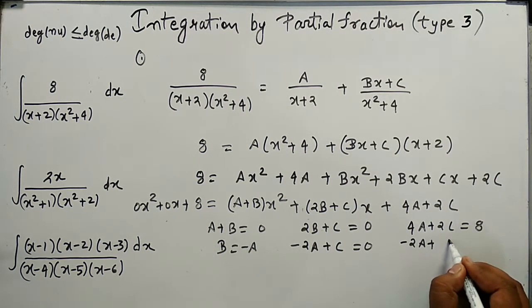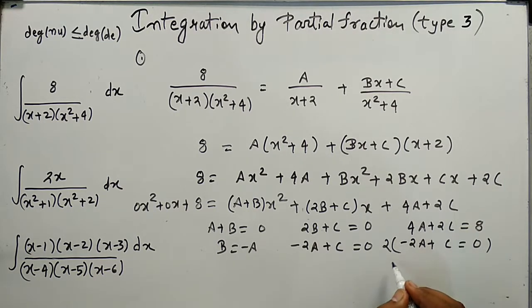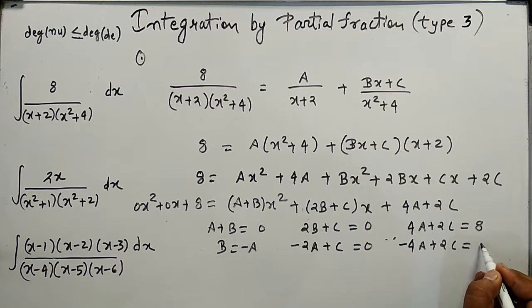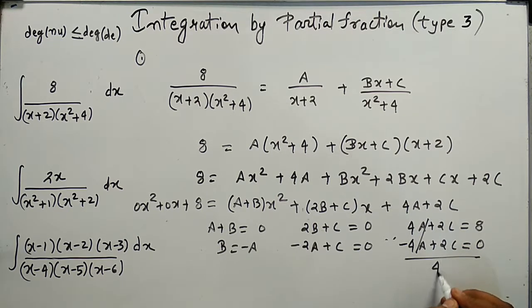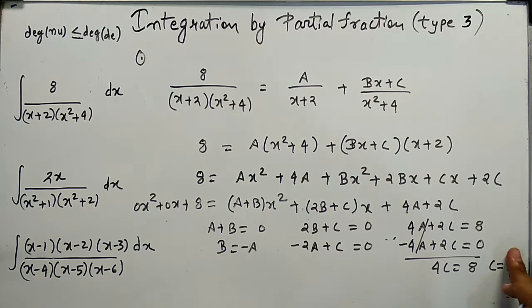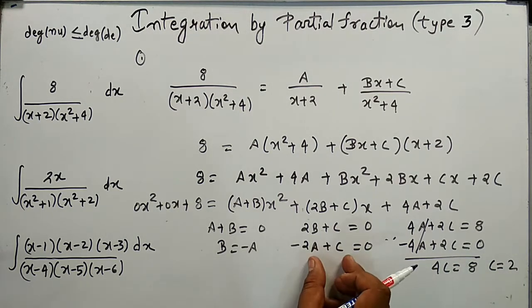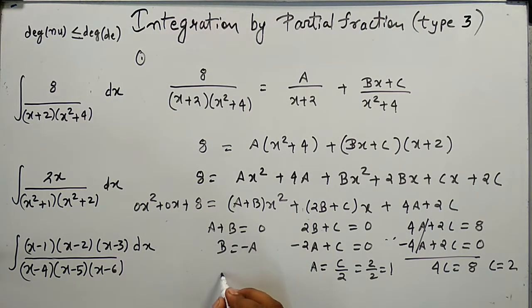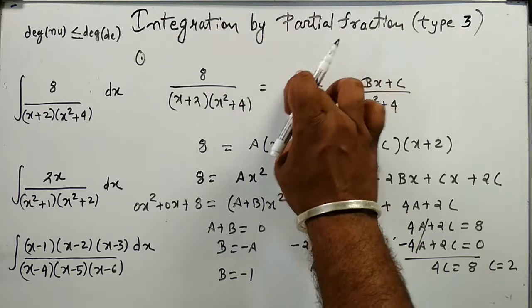Taking the equations 2B+C=0 and 4A+2C=8, and substituting B=−A, we get −2A+C=0, which gives −4A+2C=0. Adding this to 4A+2C=8, we get 4C=8, so C=2. Putting the value of C back gives A=C/2=1, and therefore B=−1. We have now found the values A=1, B=−1, and C=2.